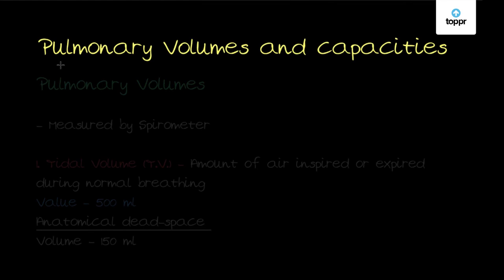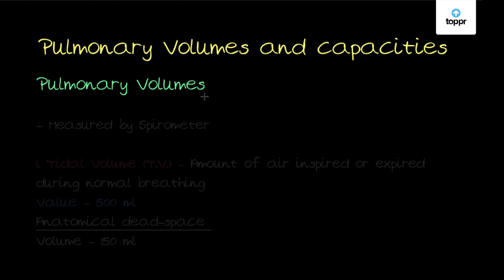In this lesson we are going to cover the topic of pulmonary volumes and capacities. Pulmonary volume and capacities majorly talk about the amount of air which can be held by our lungs. Pulmonary volume refers to the maximum capacity of our lungs — it is a quantity that can be measured. Pulmonary capacity, on the other hand, is simply an inferred value. Pulmonary volume is divided into four types.